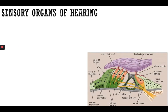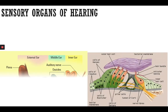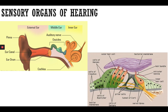The next sensory organ is hearing. Our ear is divided into three parts: the external ear, the middle ear, and the inner ear. The external ear starts with the pinna, and then sound travels to the ear canal, passes through the ear canal, and reaches the eardrum.